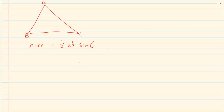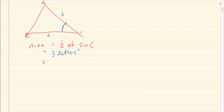For the area rule, it's half AB sin C. The best way to remember it is that you need three letters to be able to use the area rule. So if you are given A and B, then you must have C — so you have A, B, C. It works with side, angle, side. If you have side-angle-side in the triangle, then you can use the area rule.